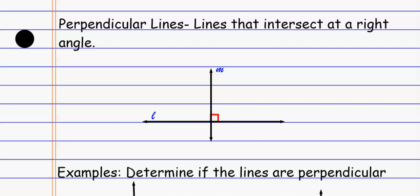With parallel lines, we're measuring to see if each line had the same angle. Now with perpendicular lines, we're measuring to see if they intersect at a right angle.